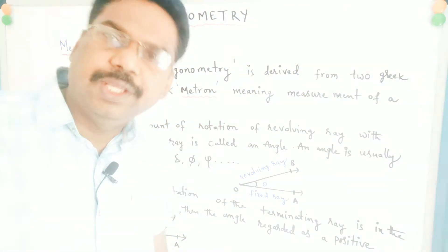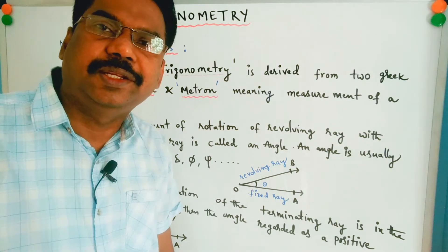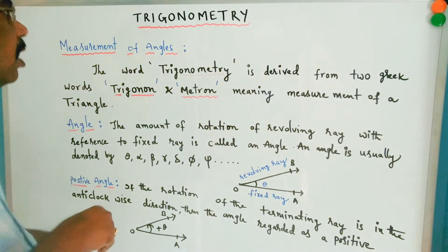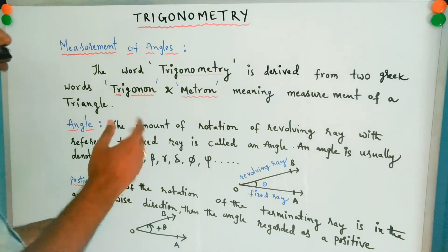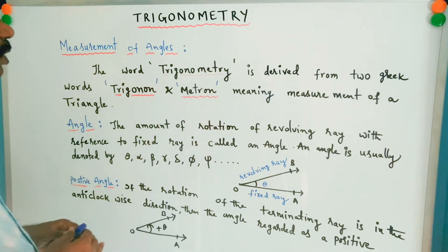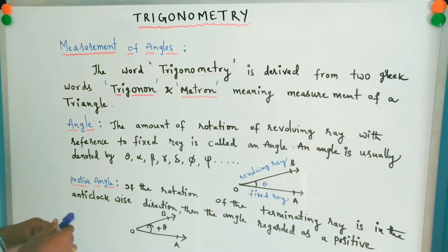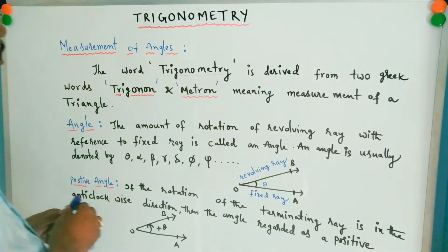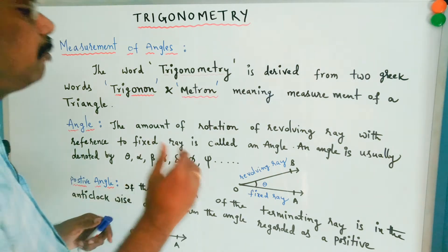Hi students, if you like this video please subscribe and share it, don't forget to like it. Now the topic is trigonometry — concept: measurement of angles. The word trigonometry is derived from two Greek words, trigon and metron. Trigon means triangle, metron means measurement, so trigonometry means measurement of a triangle.